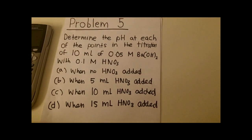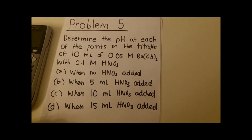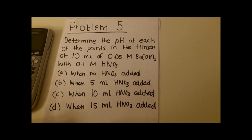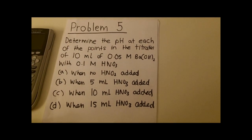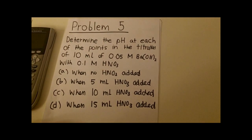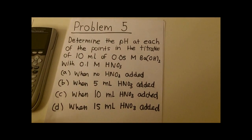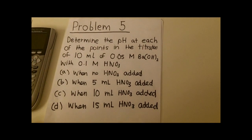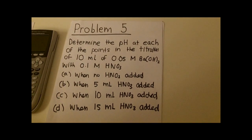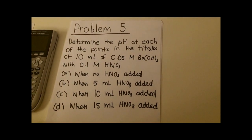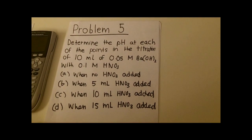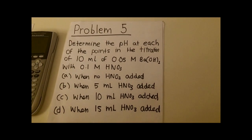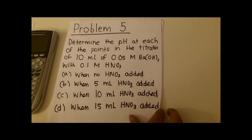Hey guys, it's Manpreet here again. We're going to be doing another problem involving a strong acid, strong base titration. This one says: determine the pH at each of the points in the titration of 10 milliliters of 0.05 molar barium hydroxide with 0.1 molar nitric acid.